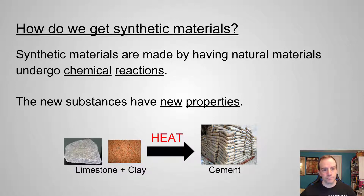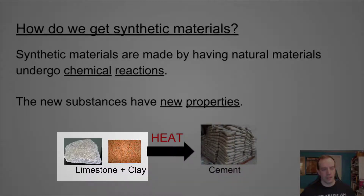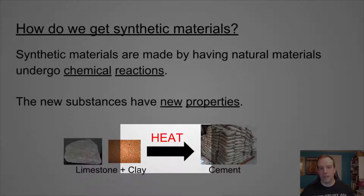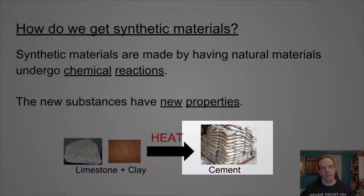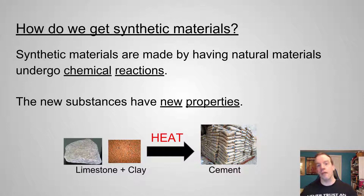Let's talk about that. We get synthetic materials from natural materials — we have to take those natural materials and then change them through chemical reactions into new things with new properties. For example, we grind down limestone and have clay put together, heat it up, and we get cement. That chemical reaction is enabled by adding heat to it. So cement doesn't exist naturally; we have to make it by changing its properties through chemical reactions.